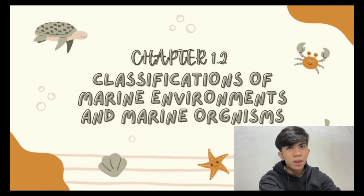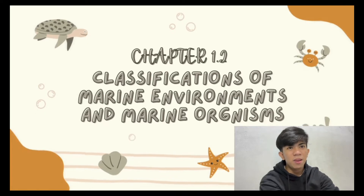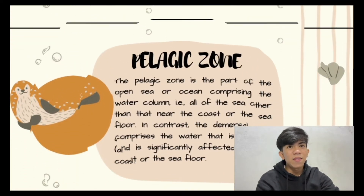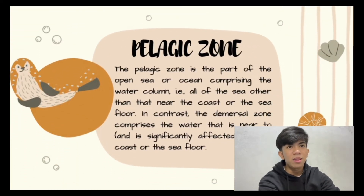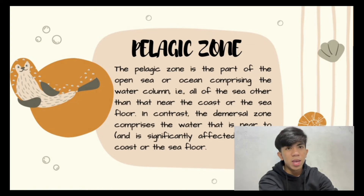The world's oceans can be subdivided into a number of marine environments. The most basic division separates the pelagic and benthic realms. The pelagic environment — pelagic meaning open sea — is that of the water column from the surface to the greatest depths. It is also sometimes defined as the part of the open sea or ocean that is not near the coast or seafloor.